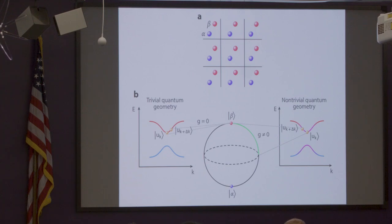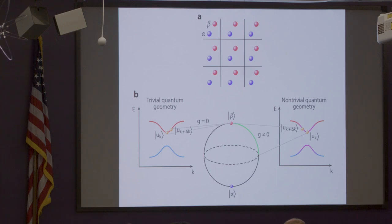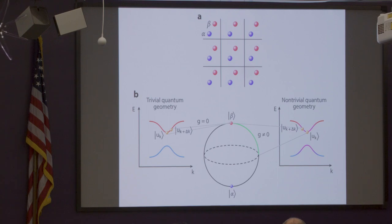Imagine you have a lattice system with a band structure and two orbitals. You could have a situation where one band is associated with one orbital only and the other band with the other orbital. Now if you change your wave function here a little bit with respect to the Bloch momentum, in this case they both still lie at the north pole — so you will have zero quantum metric. However, if you have mixing of the orbitals so the bands have a mixed character, then when you move a bit from here to here, you move from one position on the Bloch sphere to another one, so there is a finite distance and your quantum metric is non-zero.